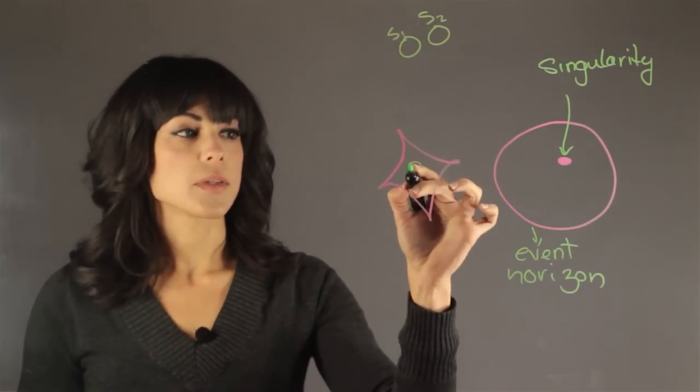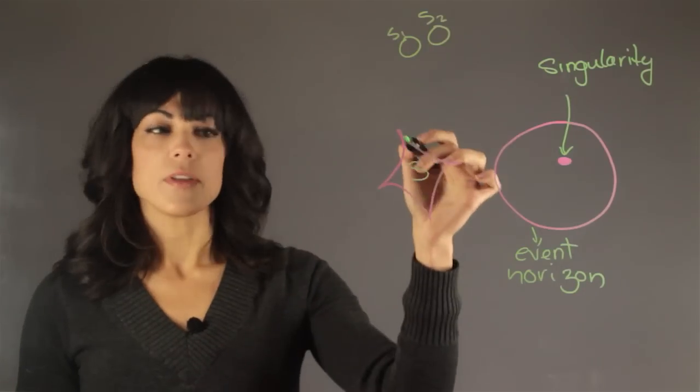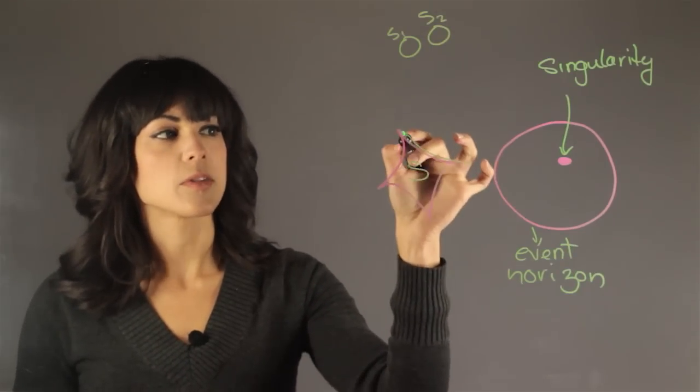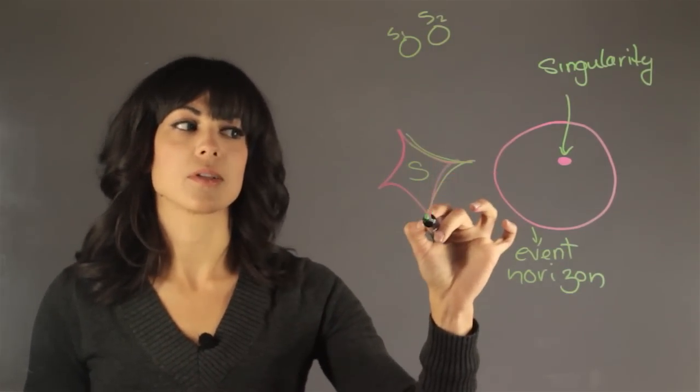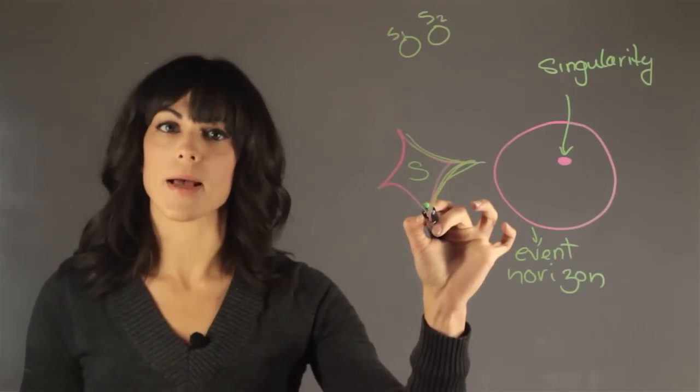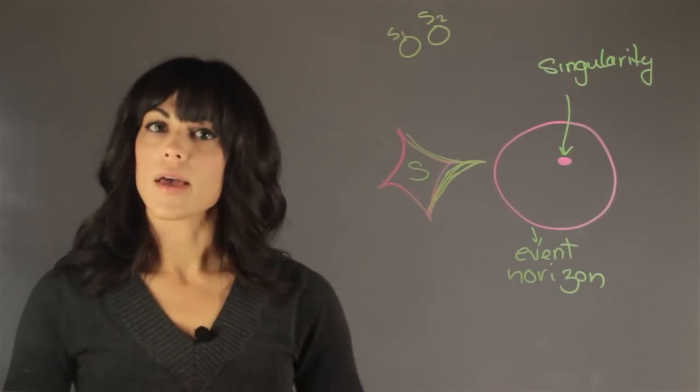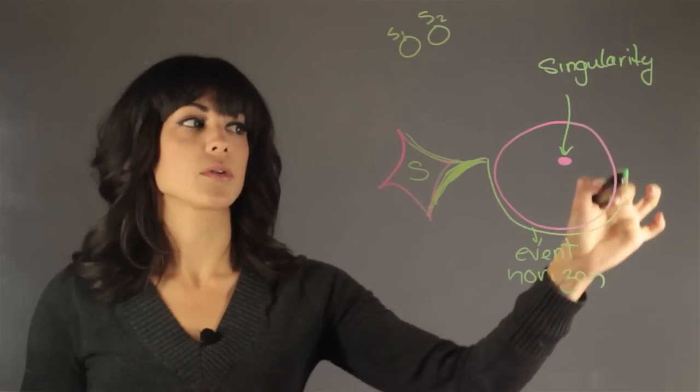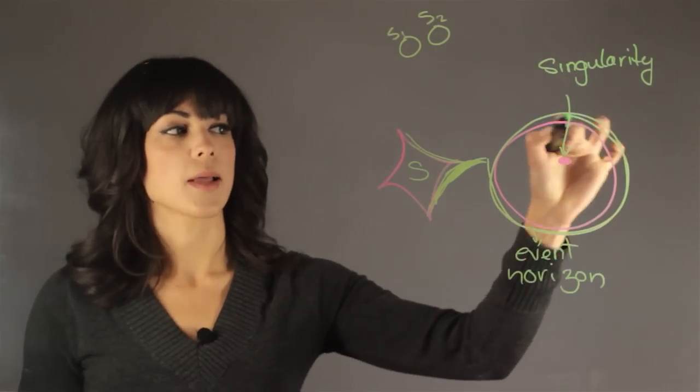So what's happening with this star is it's feeling the gravitational pull of the black hole. And some of its material is going to start to slowly move towards the black hole. And what's mostly going to happen is that it's going to circle around the black hole.